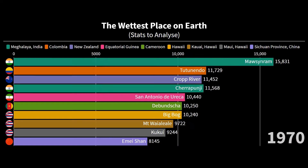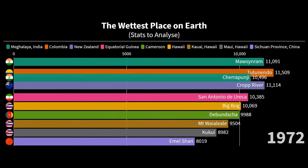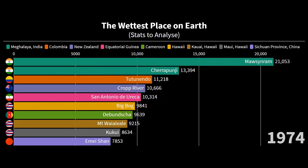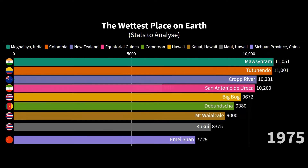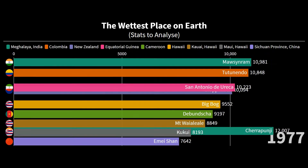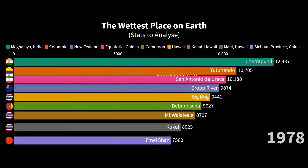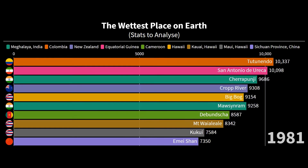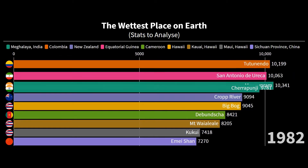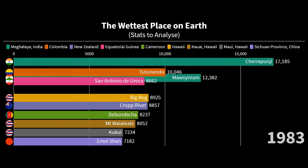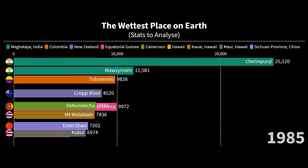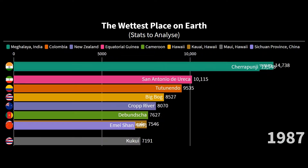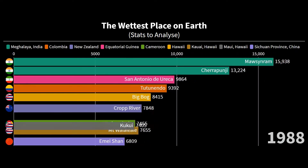Now moving forward, let's have a look at the bar race to get a clear picture of those places where it never stops raining. First thing first, let me clarify the axis: the very left side of the screen represents the flag of the country; the name of the village, city, or place is written inside the bar; the color coding is done as per the country of that place; and the name of the country is written just below the header. All the data is in millimeters per year, and the corresponding year is written in the southeast corner of the screen.